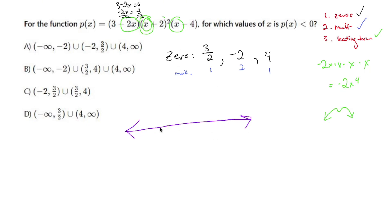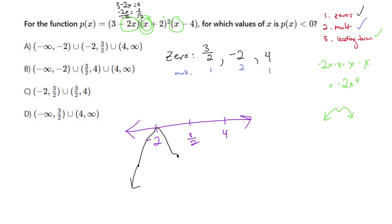I label my zeros negative 2, 3 over 2, and 4. Starting at the bottom left — because it looks like an upside-down M — as I head towards negative 2, since the multiplicity of negative 2 is even, it's not going to go through; it's going to bounce off. Then it comes back up, goes through 3 over 2 because the multiplicity is 1, comes back down through 4 for the same reason, and end behavior goes down.